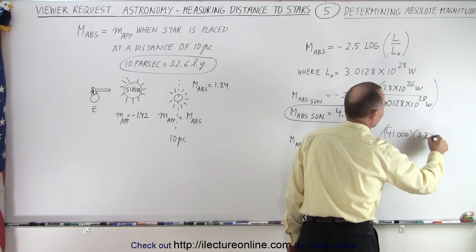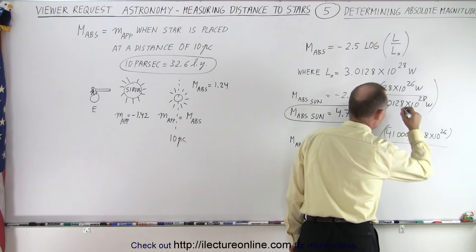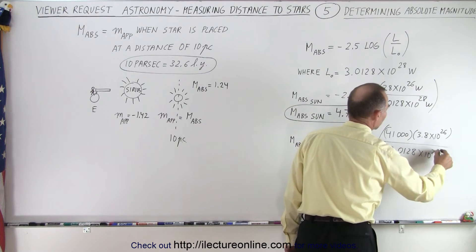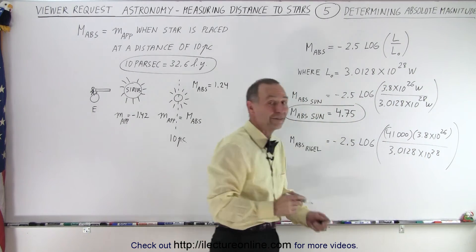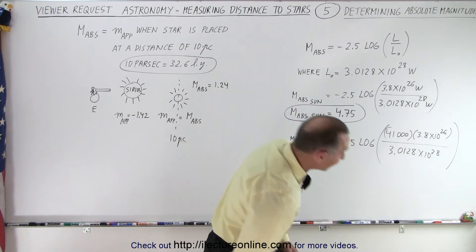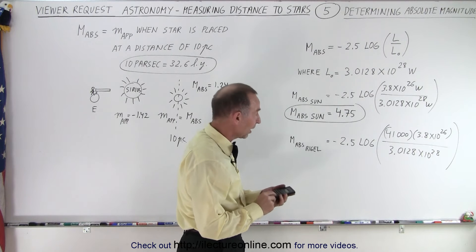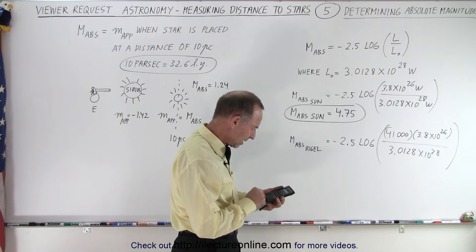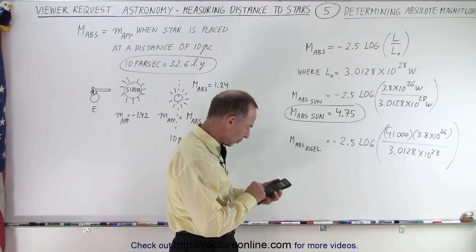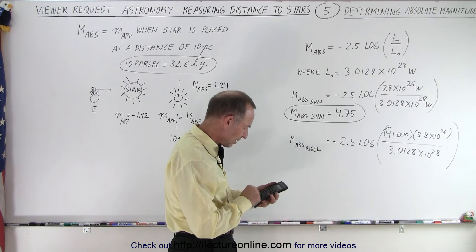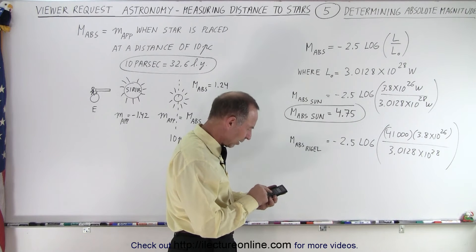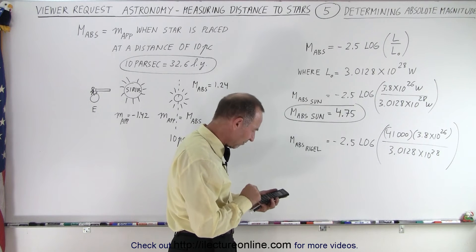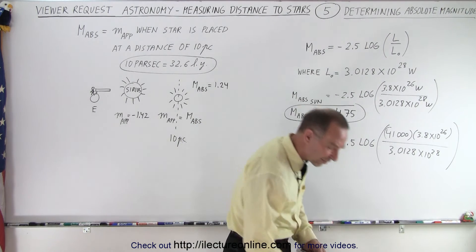All divided by the base luminosity of 3.0128 times 10 to the 28. And again, it all depends upon the values that we use, and you'll see different values from different sources, even for the luminosity of the sun. So we have 41,000 times 3.8 e to the 26, divide that by 3.0128 e to the 28, take the log of that and then multiply times 2.5 negative and we get minus 6.78.